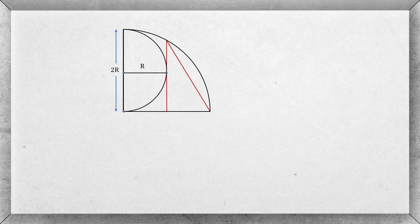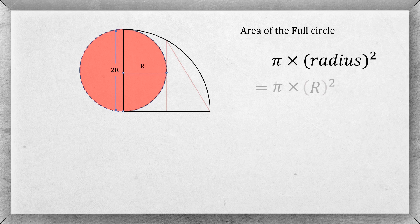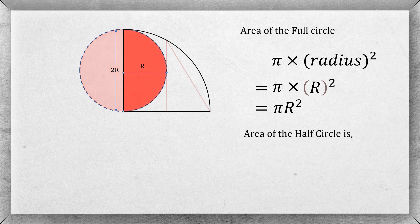Now to find the area of the semicircle, we will first complete the circle and then find the total area of this full circle, which is π times radius squared. Here the radius is equal to r, therefore the area of the full circle is πr². So the area of the semicircle is half of the full circle, which is πr²/2.